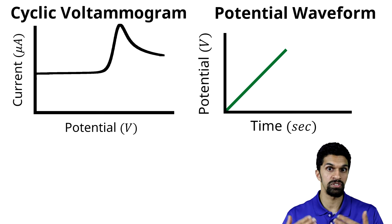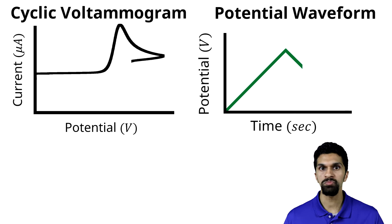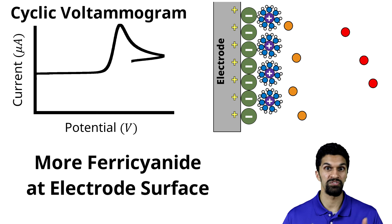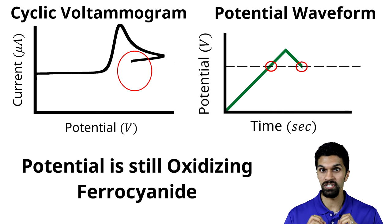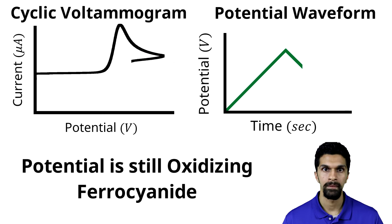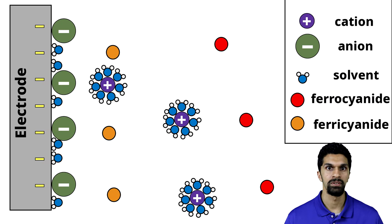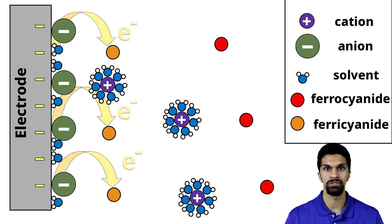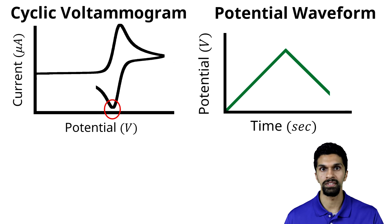As we continue to sweep the potential, we reach the switching potential and start sweeping backwards — negatively. At this point, most of the species near the electrode surface is ferricyanide, the oxidized form of ferocyanide. As we sweep the potential backwards, it is still sufficiently positive to continue oxidizing ferocyanide. However, at a certain point the potential becomes sufficiently negative that we begin to reduce — the electrode donates an electron to the ferricyanide molecule and converts it back to ferocyanide. So we see a peak current associated with the reduction of ferricyanide back to ferocyanide.